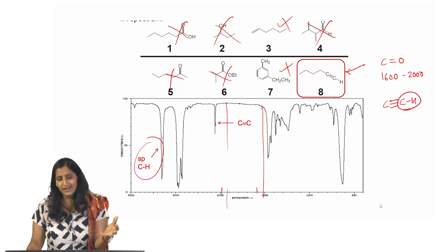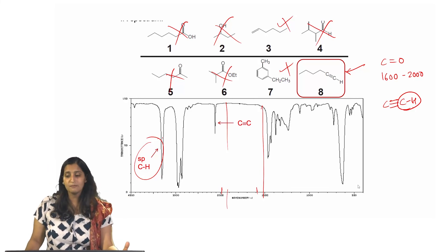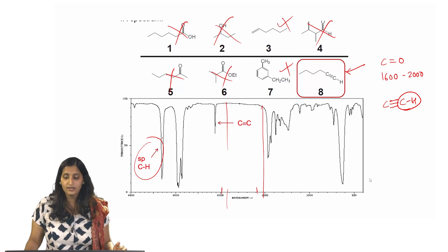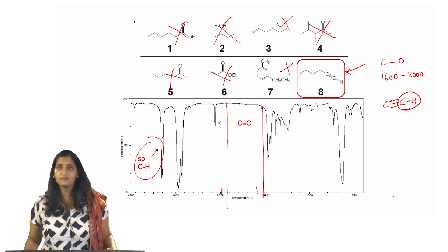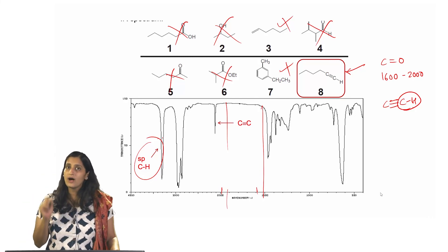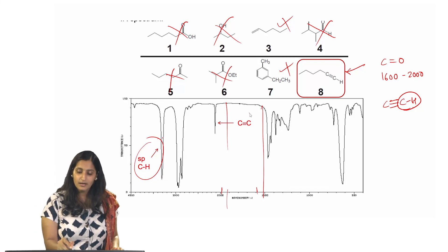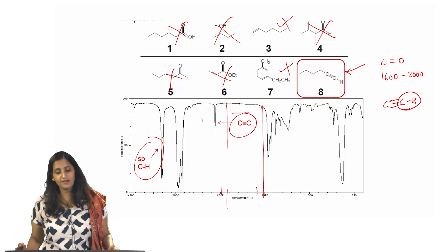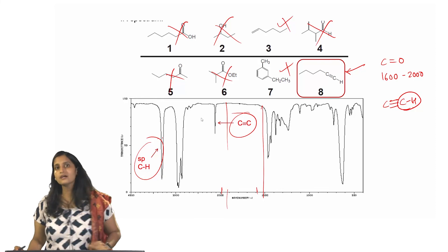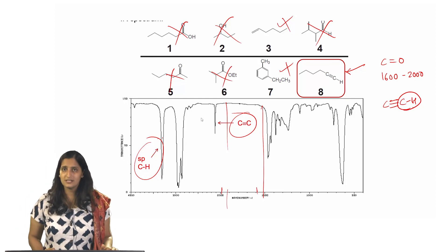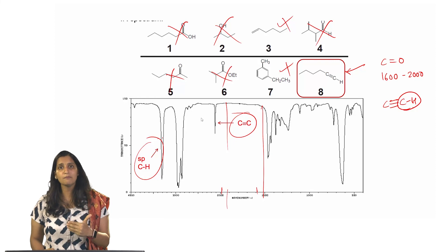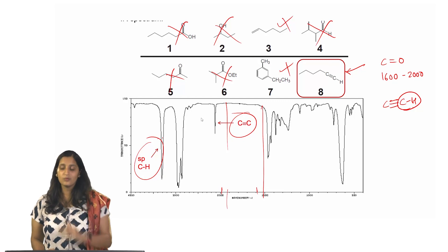IR does not give you all information — for example, it will not tell you what kind of terminal alkyne you have, whether it is a 5-carbon or a 7-carbon terminal alkyne. But IR definitely tells you that you have a terminal alkyne and also shows a carbon-carbon triple bond peak between 2000 and 2500 cm⁻¹ as a nice sharp peak. That's how straightforward IR interpretation is — it is basically referring to a table, figuring out what peaks you have in the spectrum, and then narrowing it down to the corresponding structure.